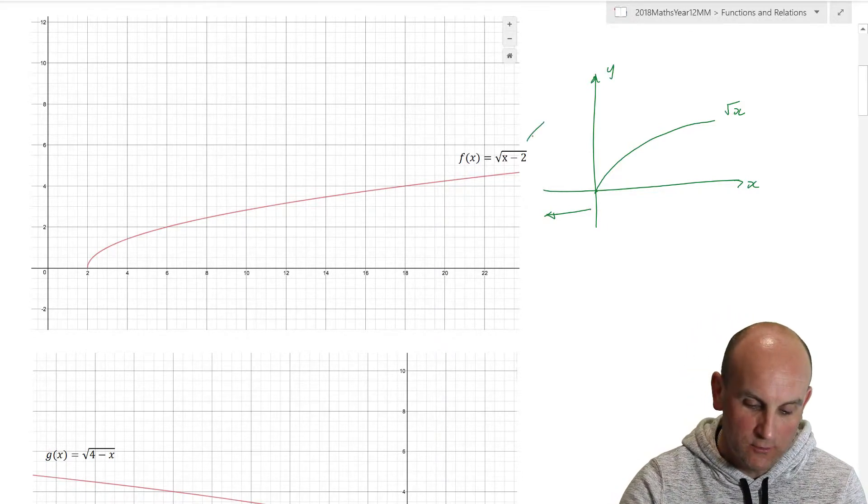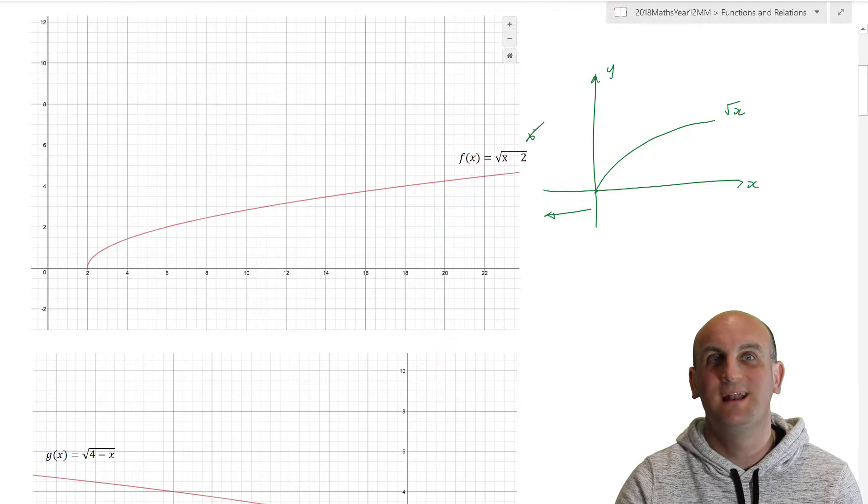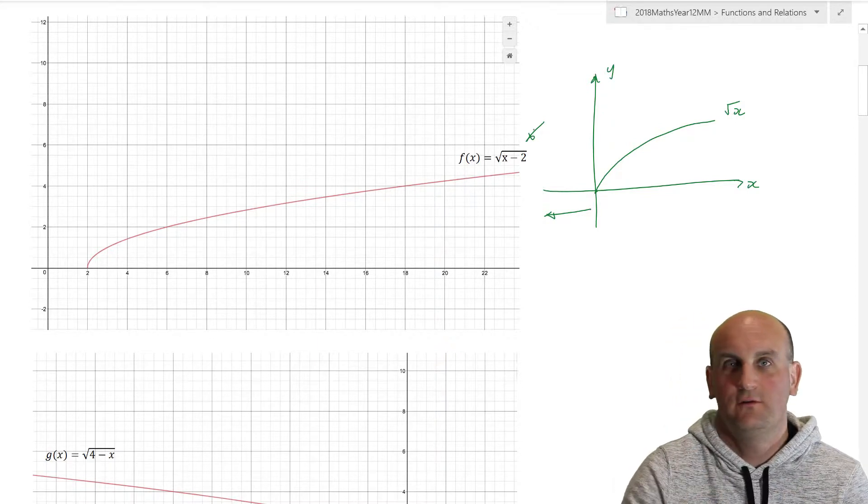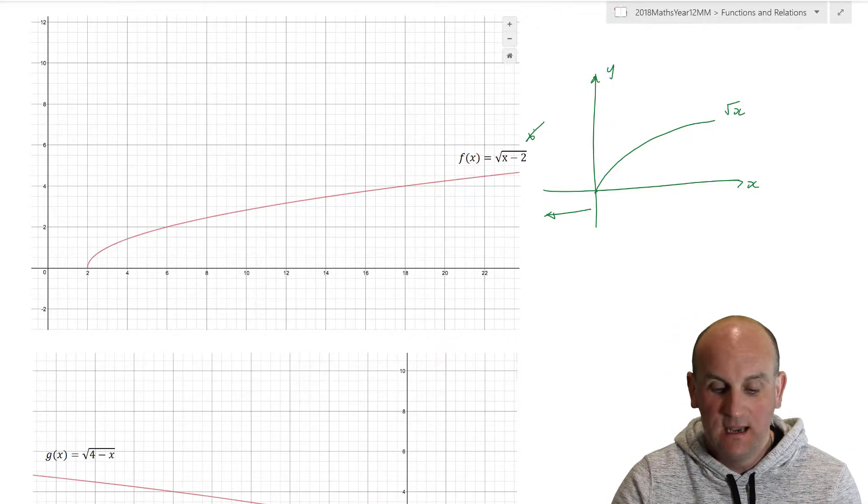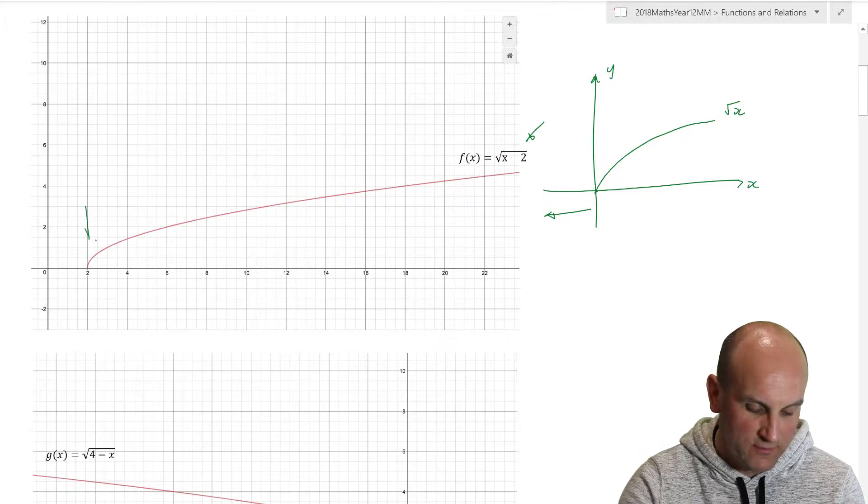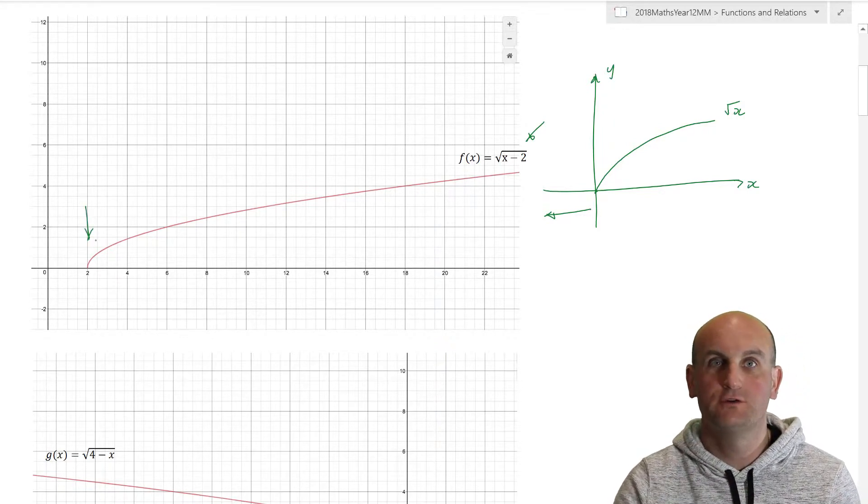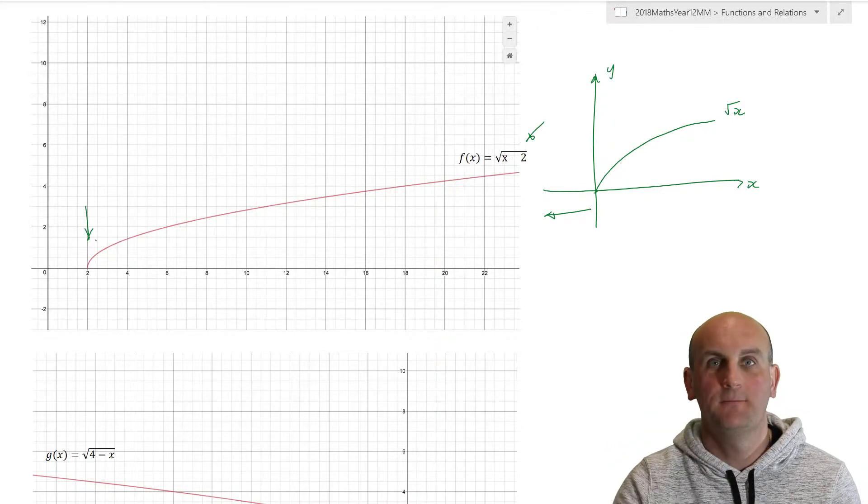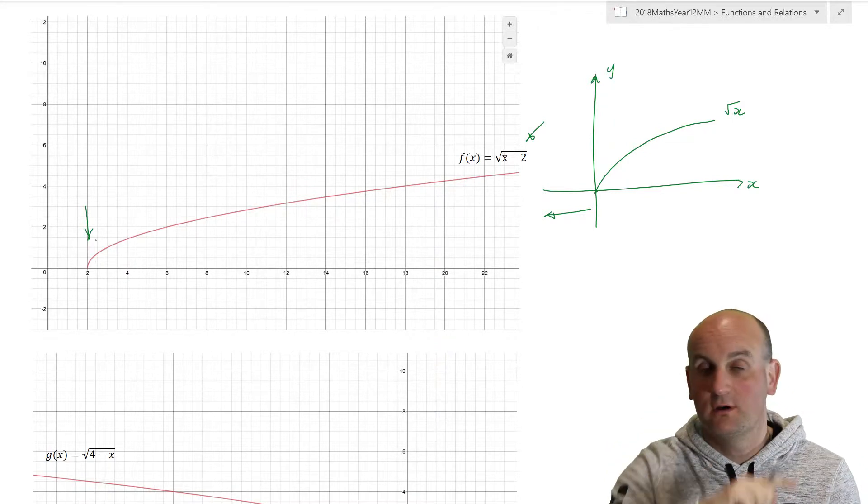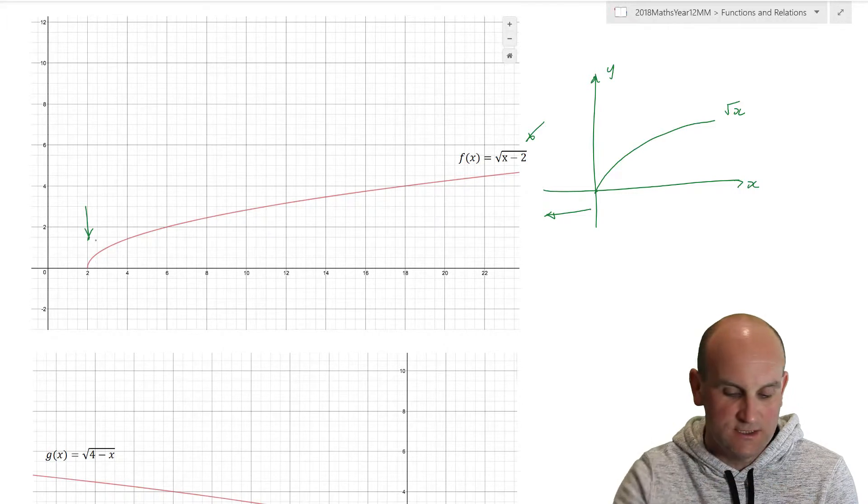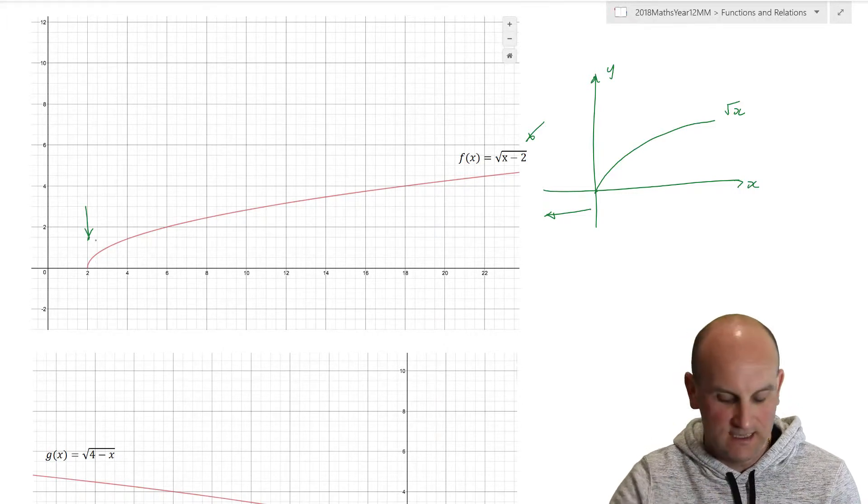If you're following this on from methods one and two, then the good news is you already know about transformations. That function there basically tells you to take my standard square root function. There is my Y and there is my X. And so this there is the square root of X. The good thing to notice about that is there is no values of negative X because you can't square root a negative number.